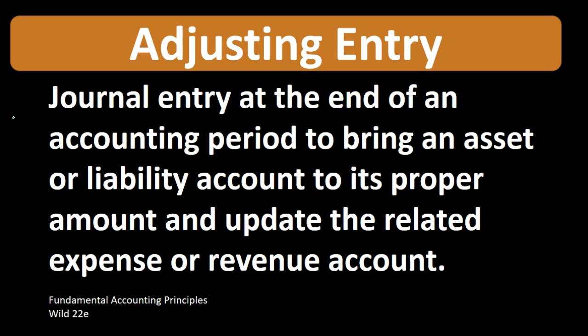Let's break that down a bit. An adjusting entry is still a journal entry, so we have the typical journal entry which is going to have at least one debit and at least one credit, and what must remain in balance. What sets this apart is it's going to be at the end of the accounting period — typically the end of the year or the end of the month — because that's when we make the financial statements, and therefore we want to make everything correct on an accrual basis as of that point in time.